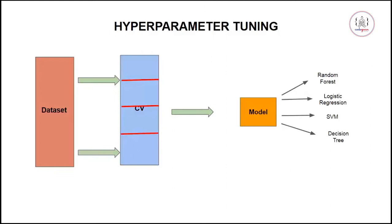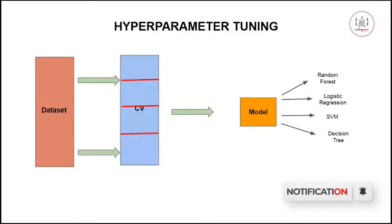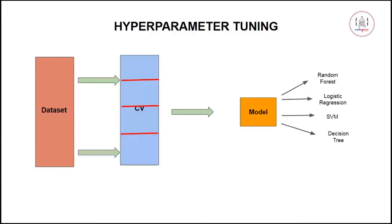The model could be a random forest, logistic regression, SVM, decision tree, and so on. Now there are different parameters that you have to decide. For random forest, you have to decide how many decision trees it should build. For SVM, you have different parameters like kernel, C, gamma, and decision function. So how do we decide the optimal values of all these parameters?